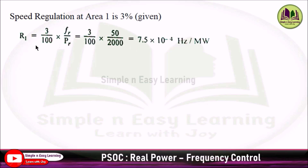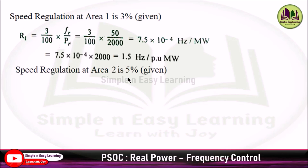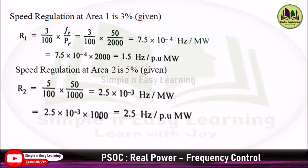Speed regulation for area 1 is 3%, so R1 = (3/100) × (Fr/Pr) = 0.03 × (50/2000) = 7.5×10⁻⁴ Hz/MW. In terms of Hz/pu-MW, multiply by base 2000: R1 = 1.5 Hz/pu-MW. Similarly for area 2, R2 = (5/100) × (50/1000) = 2.5×10⁻³ Hz/MW. In terms of Hz/pu-MW, multiply by base 1000: R2 = 2.5 Hz/pu-MW.